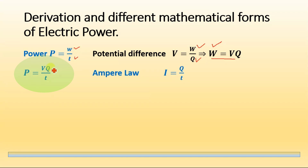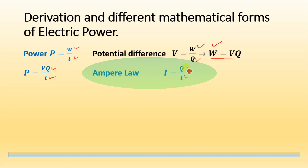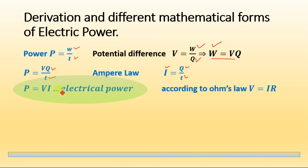In this equation, Q is the charge and T is the time. According to Ampere's law, current I = Q/T — that is, the number of charges passing through a point per unit time is the current. Substituting Q/T with I, we get P = VI.